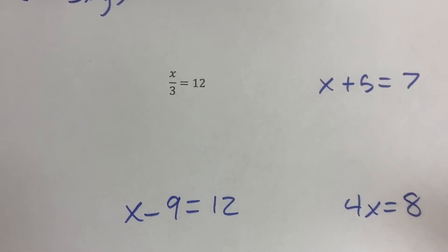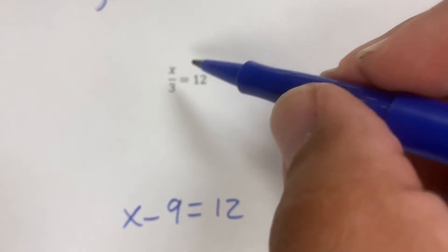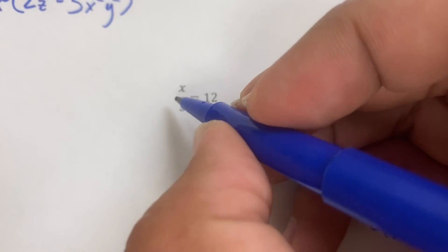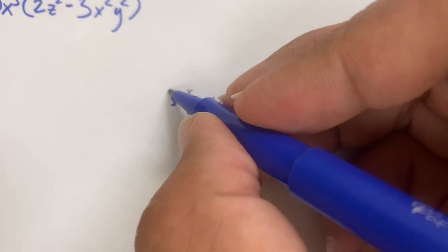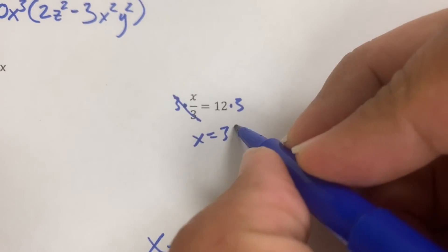So now let me solve these. These are one-step equations. The way you solve a one-step equation is whatever is happening to the x, you do the opposite to the other side. So the opposite of dividing by 3 would be multiplying by 3. That would cancel here. Multiply by 3. x equals 36.